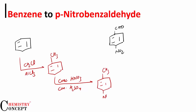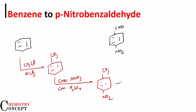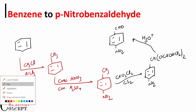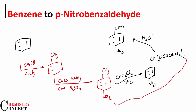Then, if you remember the Etard reaction — CrO₂Cl₂ in CS₂ — it forms a complex: CHO·CrO(OH)Cl₂, drawn twice, which on hydrolysis gives our desired aldehyde product.